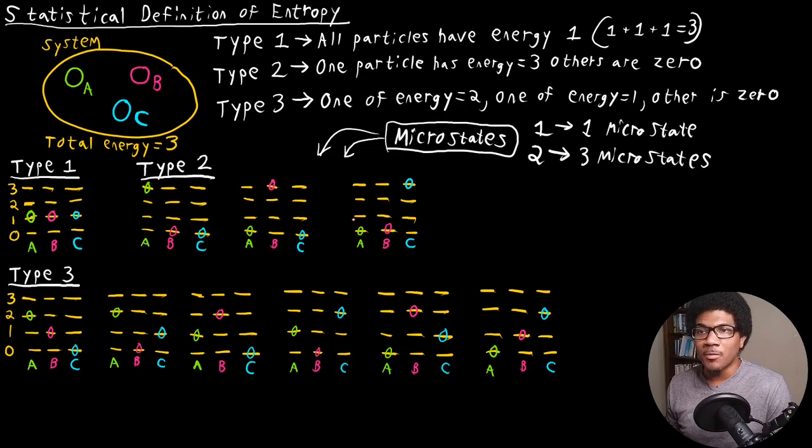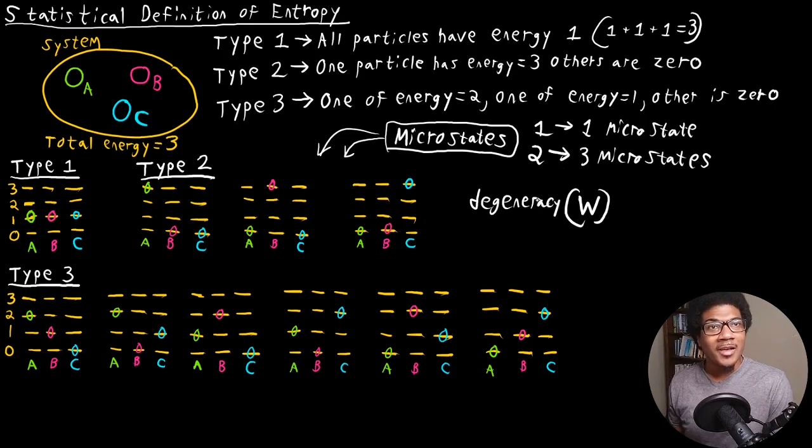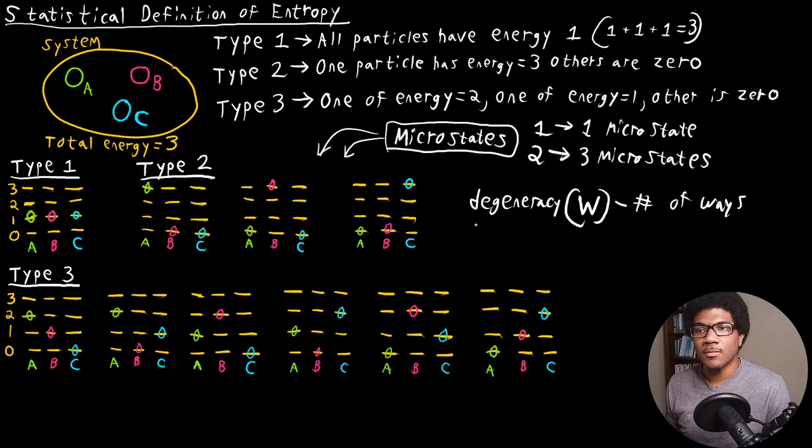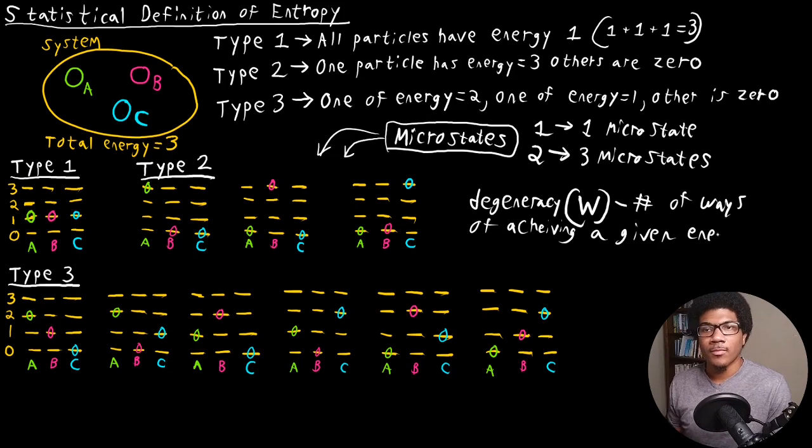So whenever you have multiple microstates that give you the same energy, these are called degeneracies. Degeneracy. Which we're going to use the letter W to denote degeneracy. So we would say that type two distributions are threefold degenerate, which just means that we have three different ways to distribute the particles and still get this same total energy representation. Degeneracies are just a number of ways of achieving a given energy state. That's degeneracy.